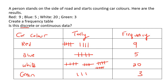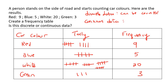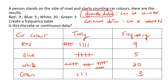Now, is this data discrete or continuous? Discrete data can be counted, whereas continuous data can be measured. When you've got cars coming past and you're counting them — that's the key word — you don't measure the cars. You don't ask for a tape measure to figure out the color. You literally just count it. So when you're looking at the color of cars and counting how many there are for each color, this is going to be discrete data.